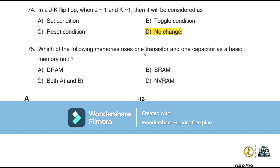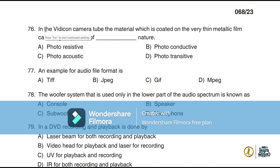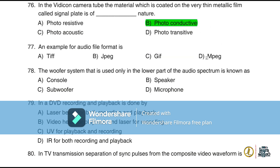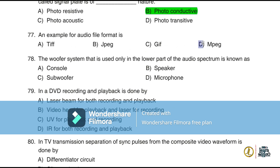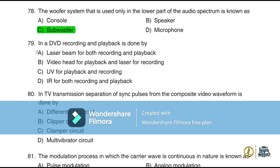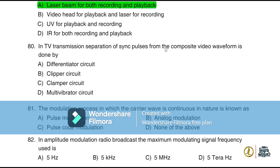Question 75: The memory that uses one transistor and one capacitor as a basic memory unit is DRAM (Dynamic RAM). Question 76: In the Vidicon camera tube, the material coated on the very thin metallic film called the signal plate is photo-conductive in nature. Question 77: An example of an audio file format is MPEG. Question 78: The woofer system used only for the lower part of the audio spectrum is known as a subwoofer. Question 79: In a DVD, both recording and playback are done by laser beam. Question 80: In TV transmission, separation of sync pulse from the composite video signal is done by a clipper circuit.